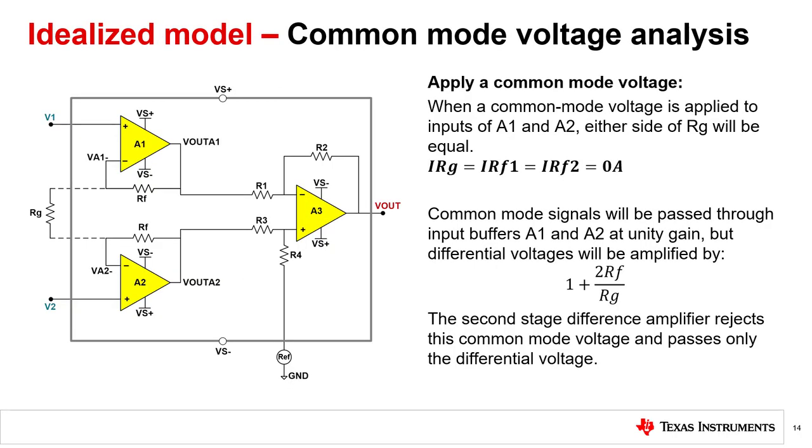By definition, a common mode signal is the same at both inputs, V2 and V1. If we apply a common mode voltage at V2 and V1, then the voltages on each side of RG will be equal and no current will flow through this resistor. Since no current flows through RG, nor therefore through both RF resistors, amplifiers A1 and A2 will operate as unity gain followers.